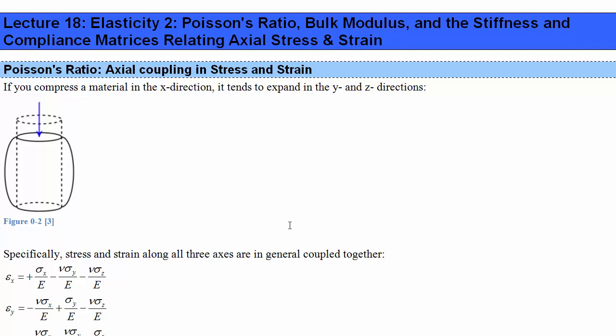Hello and welcome to Enchphys2PO4 lecture 18: Elasticity 2, Poisson's Ratio, Bulk Modulus, and the Stiffness and Compliance Matrices Relating Axial Stress and Strain.